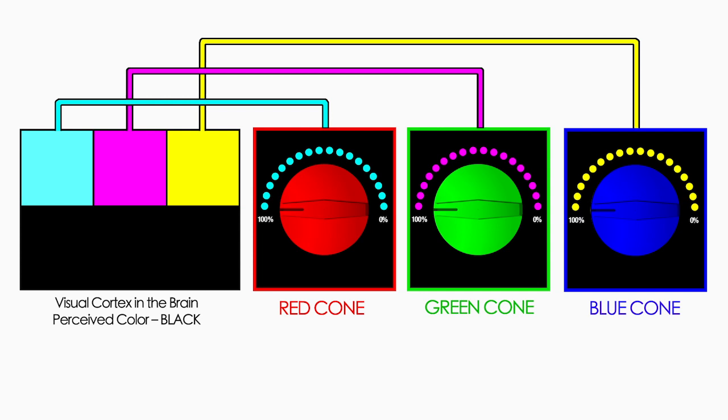These are connected to the visual cortex in the brain, shown as cyan, magenta, and yellow square boxes, to produce the perceived color. In the absence of light, each cone cell sends a maximal dark current to the visual cortex to produce the sensation of black.